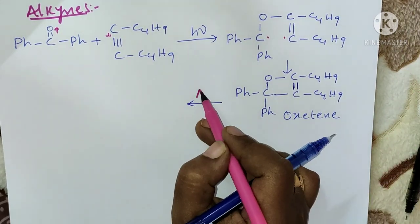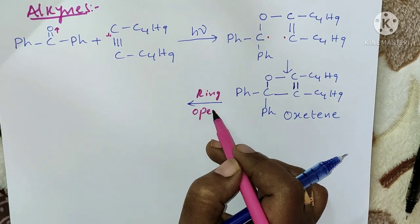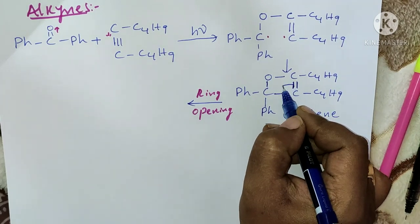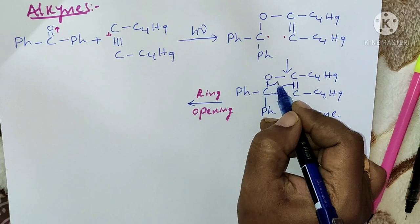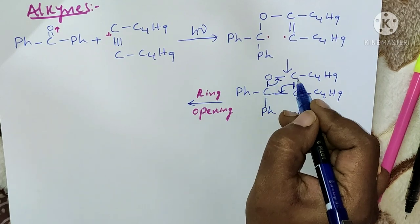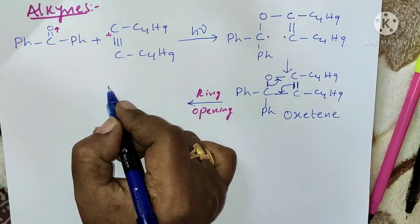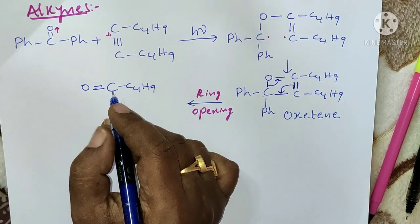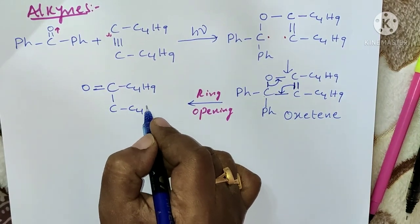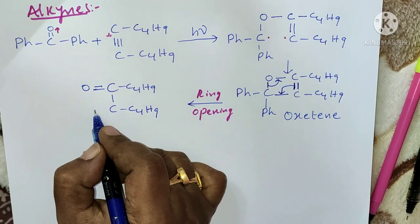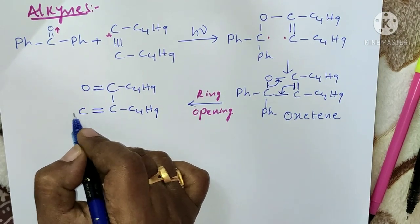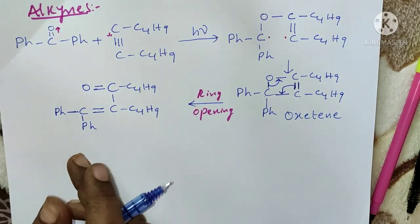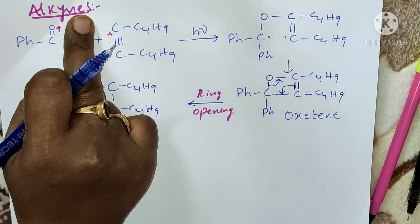Oxetene undergoes ring opening reactions. When the electrons form a bond between the two carbon atoms, the electrons shift and a new bond is formed, giving the resultant product: C(=O)(C₄H₉)-CH=C(C₄H₉)(Ph)-Ph. This is how carbonyl compounds react with alkynes.